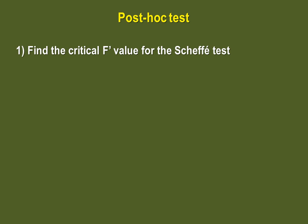This is obtained by taking your ANOVA critical F value and multiplying it by k minus 1, which is the number of samples minus 1. So in our example, our critical F value for a Scheffé test would be 3.35 times 3 minus 1, for a total of 6.70.